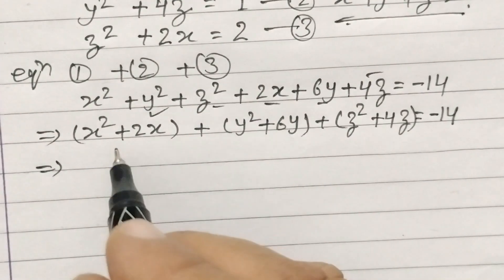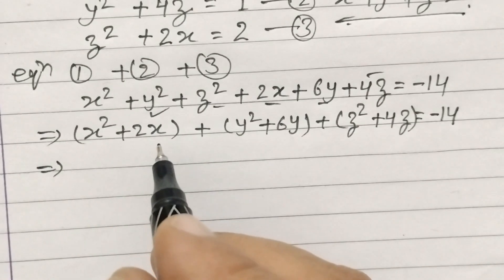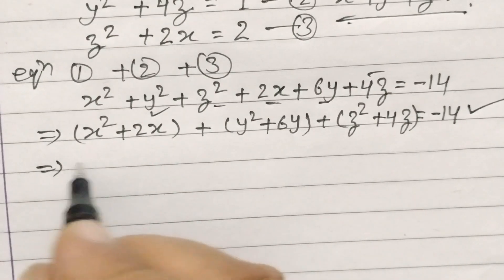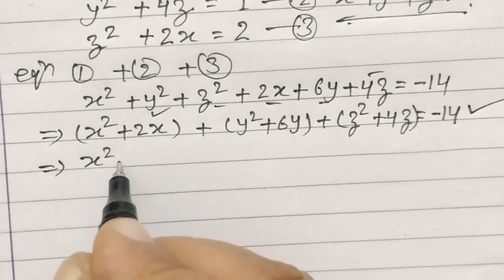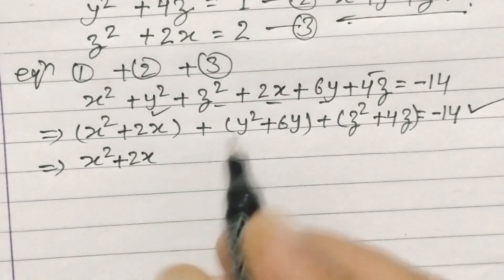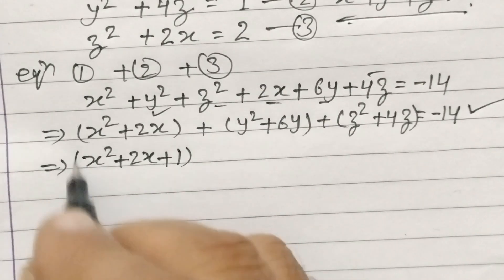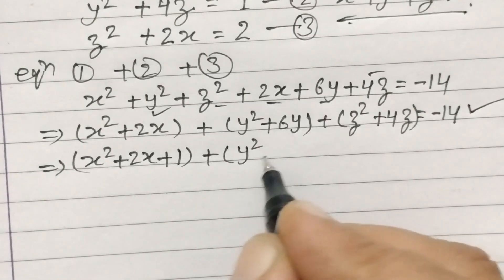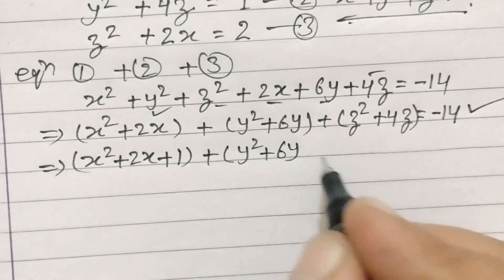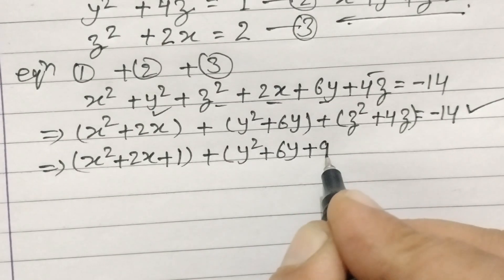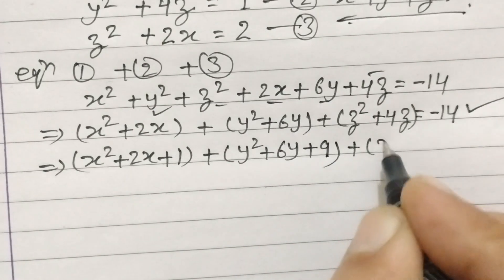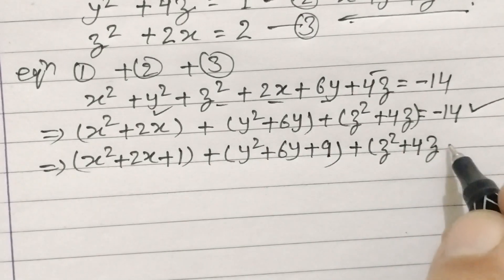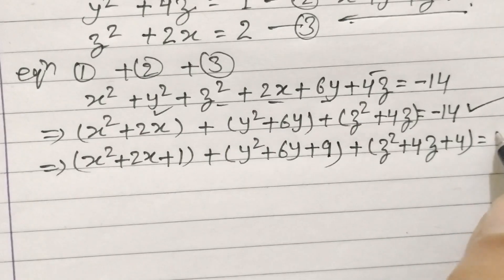Now we will make these terms as complete squares. So we will break minus 14. So x squared plus 2x plus 1 plus y squared plus 6y plus 9 plus z squared plus 4z plus 4 is equal to 0.